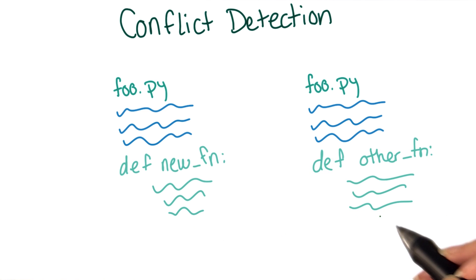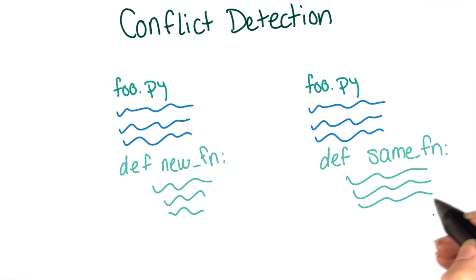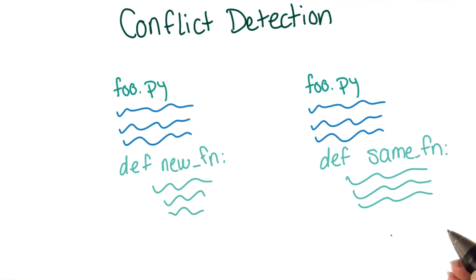In the first case, you pretty clearly want both functions to be included. But in the second situation, you probably only want one version of the function — whichever is either more memory efficient or faster depending on what you're going for. But git can't really tell these two options apart. It would take some pretty sophisticated machine learning to do this, and this is only one possible scenario. Making git smart enough to figure out all the possible cases where you'd want to auto-merge would be a huge undertaking.